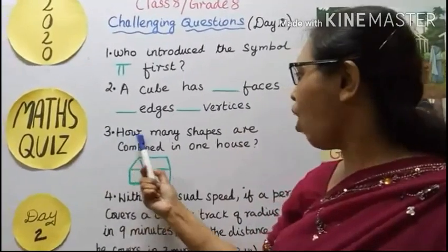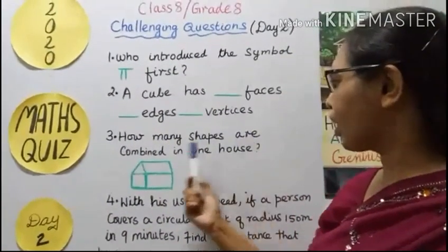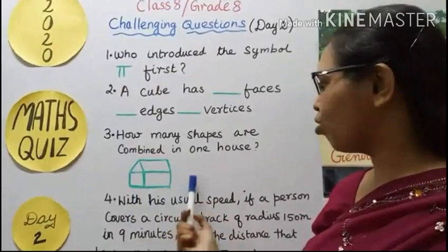Third question: How many shapes are combined in one house?